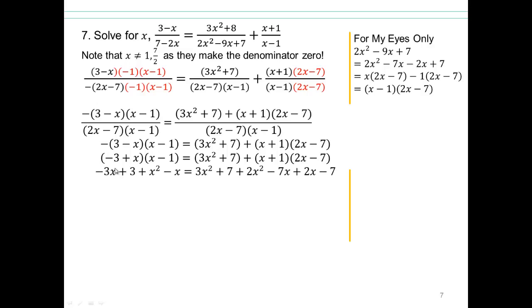Multiply it out. Then, term by term, negative 3 times x is negative 3x. Negative 3 times negative 1 is positive 3. x times x is x squared. x times negative 1 is negative x. Here we have 3x squared plus 7 plus x times 2x is 2x squared. x times negative 7 is negative 7x. 1 times 2x is 2x. And 1 times negative 7 is negative 7. OK.